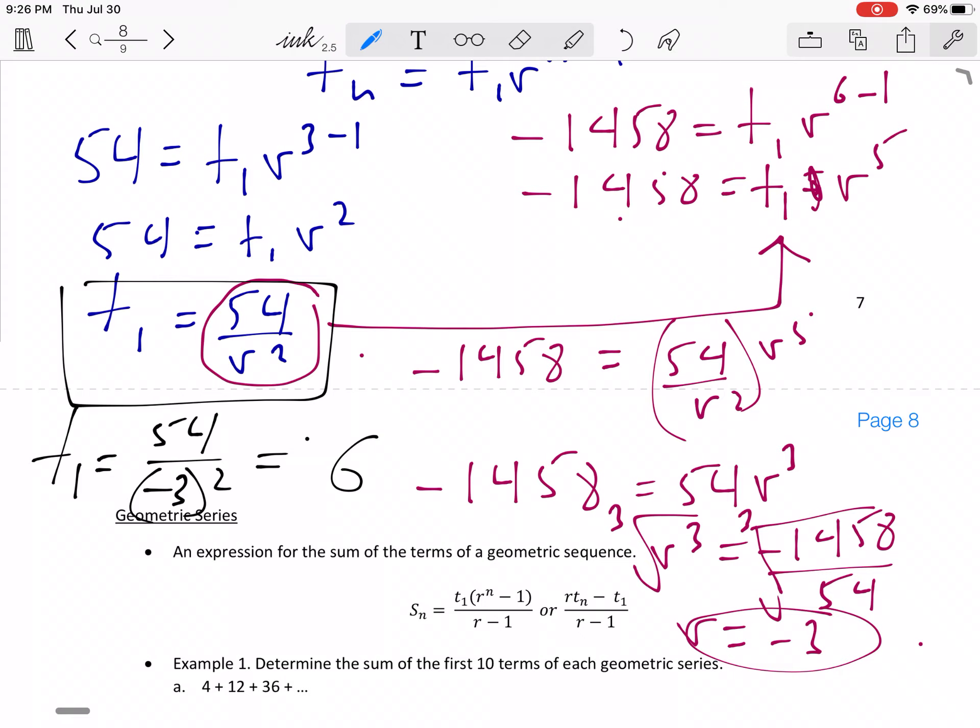So T1 is 6, R is negative 3. So using those two now you can come up with your sequence. So you've got, they were asking for the first three terms of the sequence. So the first one is 6 and then times that by negative 3 which is going to be negative 18 and then times that by negative 3 which is going to be 54. And so those are your first three terms.